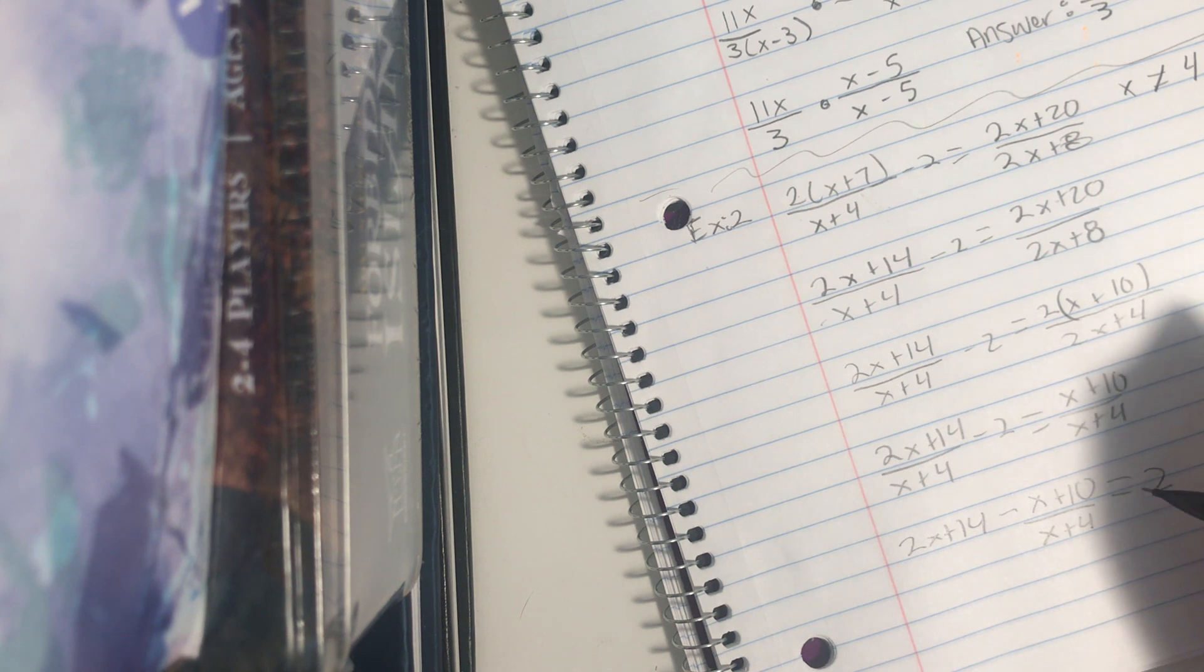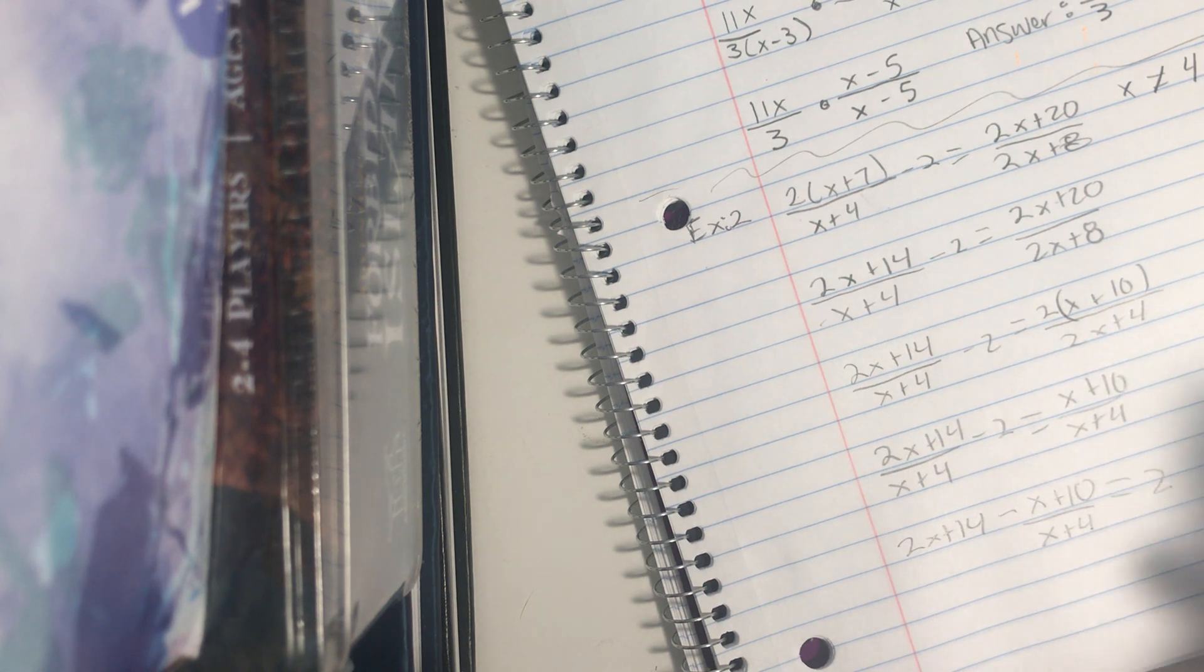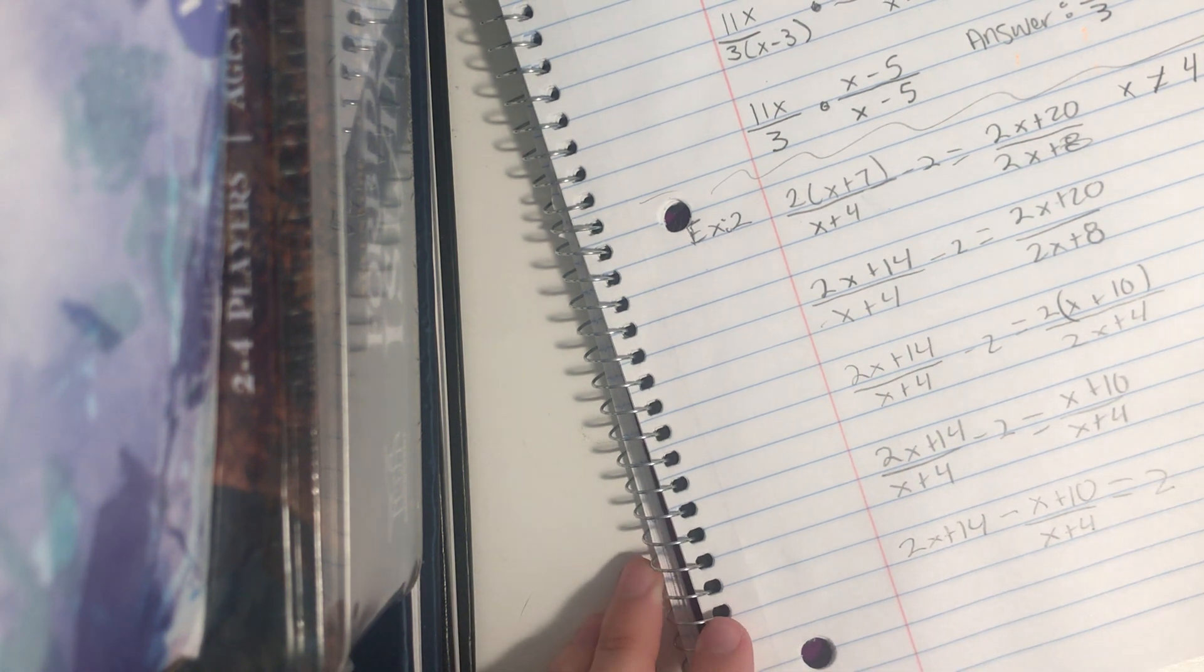So I have 2x minus x plus 10 over x plus 4, which equals 2. This expression, the sign in front of it changes, and so does this one, since I flopped them around.